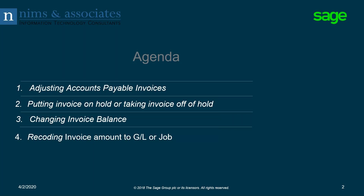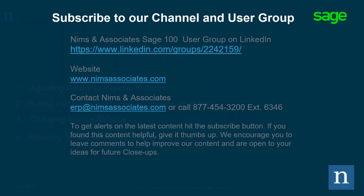To recap, we talked about using invoice data entry to adjust accounts payable invoices: putting invoices on hold or taking them off hold; changing the balance of an invoice in case it was entered incorrectly, or using a negative adjustment amount to bring the balance to zero; and doing a zero-dollar adjustment to reclassify the posting to different GL account numbers or to different jobs, cost codes, and cost types. Thank you very much for joining us today — we'd really appreciate it if you would subscribe to our channel and to our user group. You can see the information on your screen, and once again we thank you very much for your time.